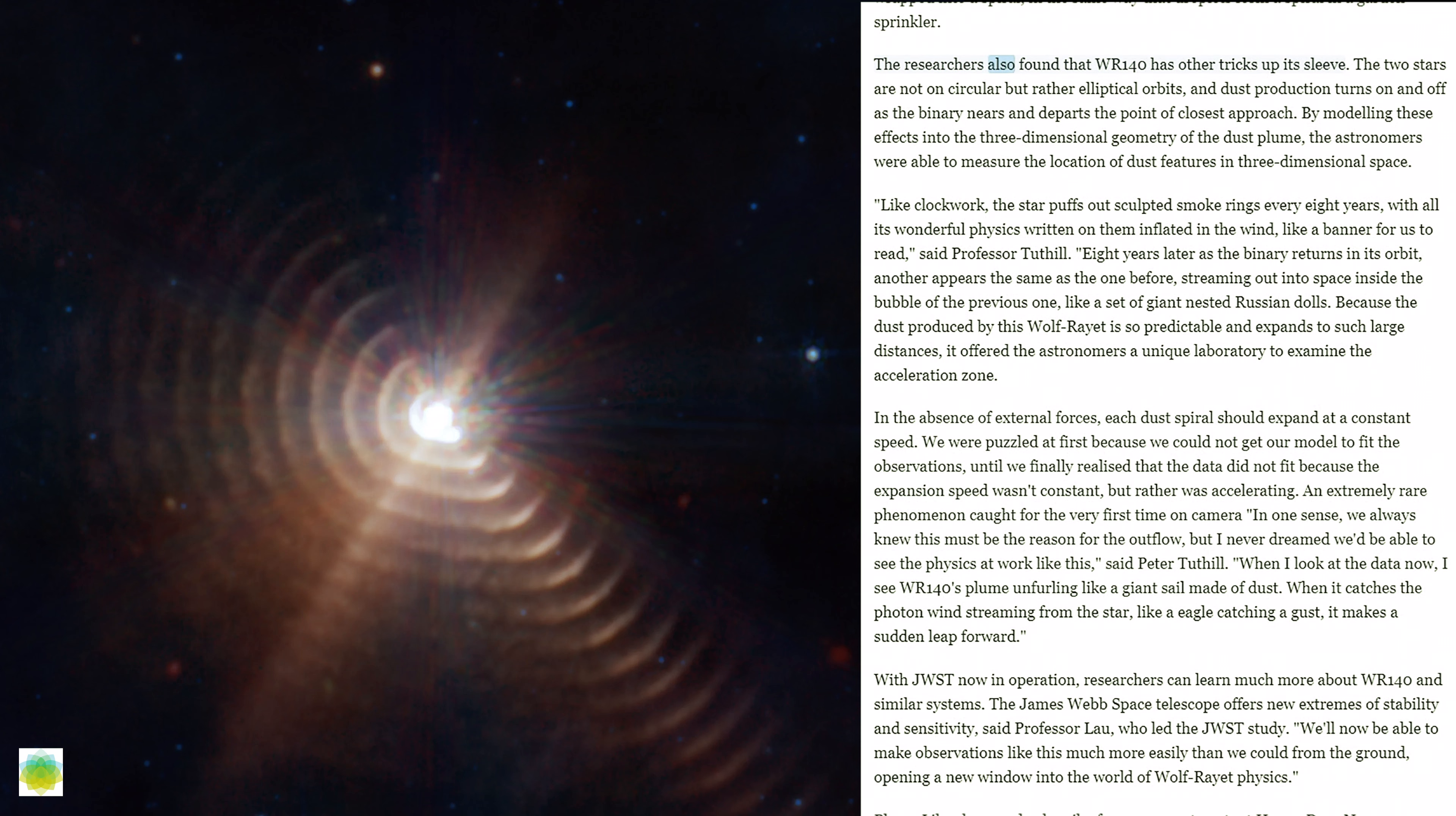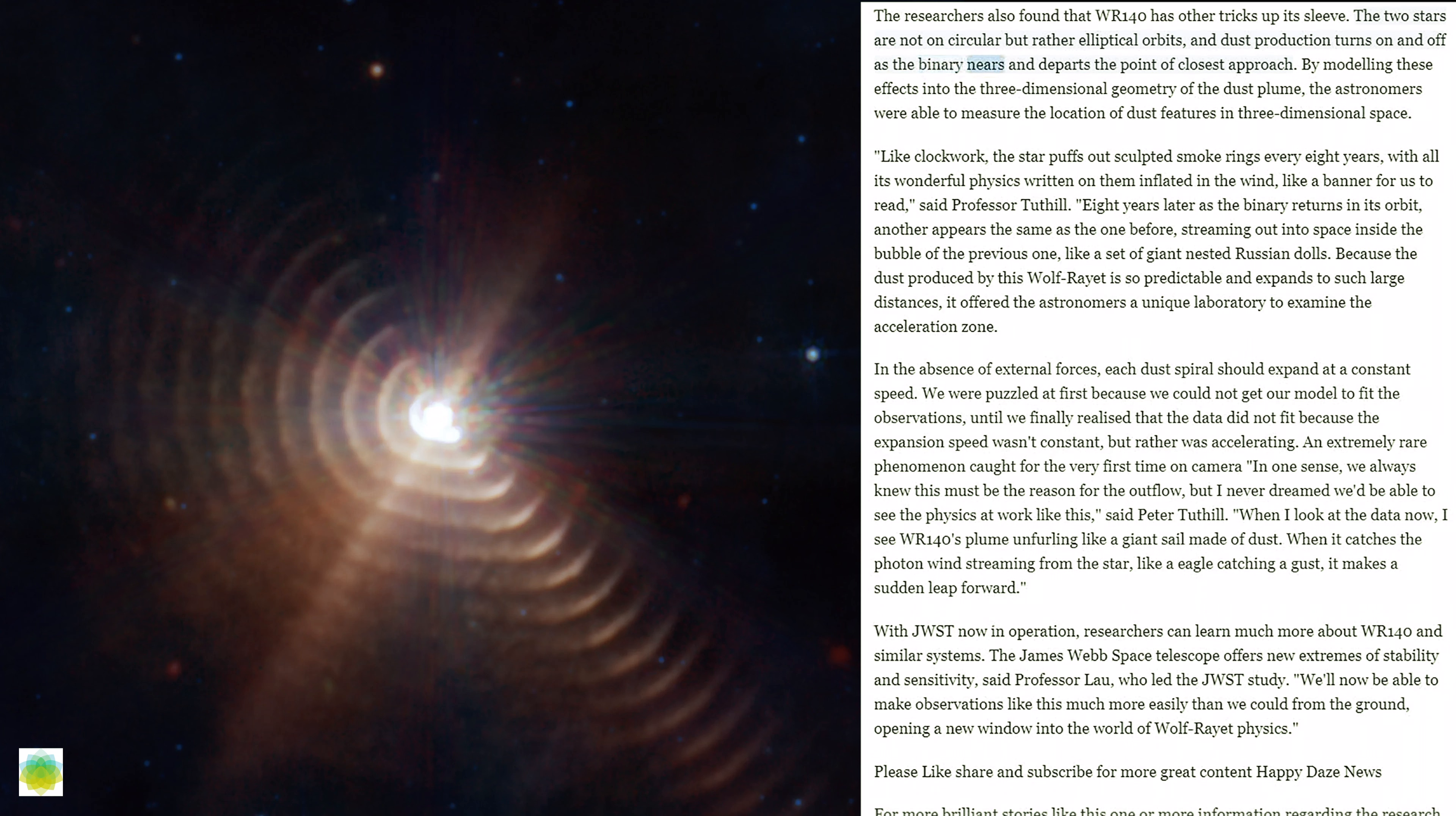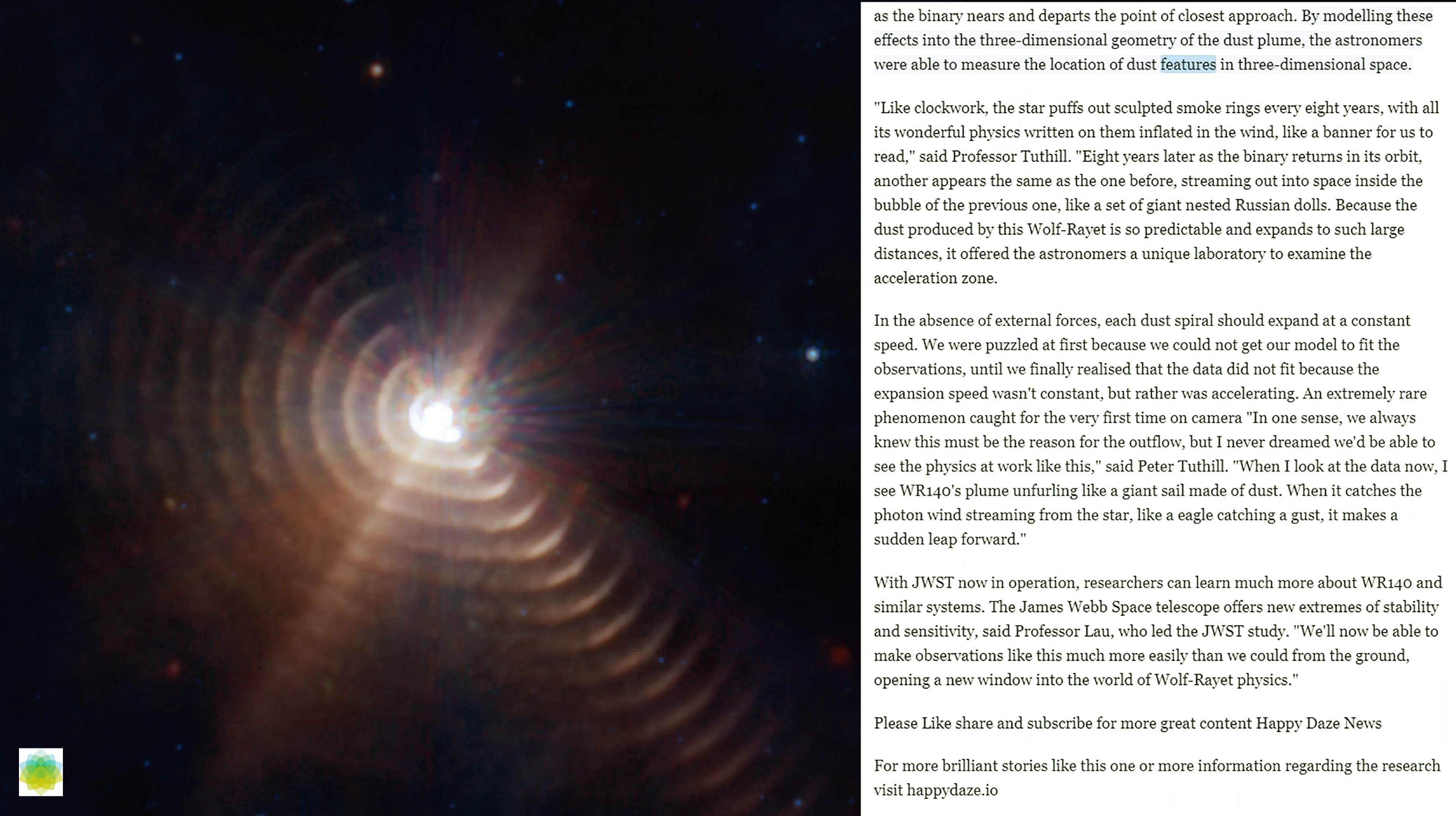The researchers also found that WR-140 has other tricks up its sleeve. The two stars are not on circular but rather elliptical orbits, and dust production turns on and off as the binary nears and departs the point of closest approach. By modeling these effects into the three-dimensional geometry of the dust plume, the astronomers were able to measure the location of dust features in three-dimensional space.